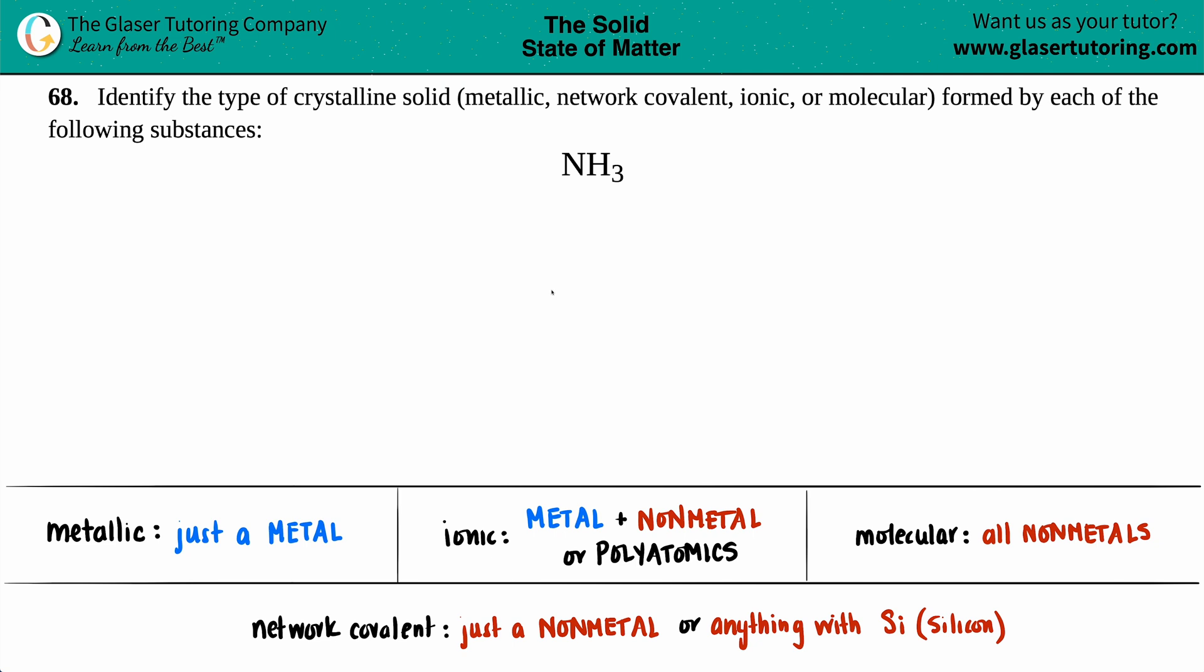Number 68: Identify the type of crystalline solid—whether it's metallic, network covalent, ionic, or molecular—formed by each of the following substances. In this case we have NH3, which is ammonia. When ammonia freezes from a liquid to a solid, what type of solid does it make?